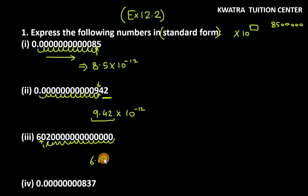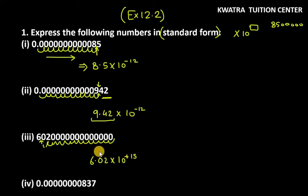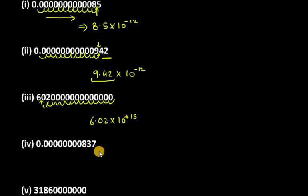We made 15 movements. So it will be 6.02 into 10 raised to the power positive 15. It is positive because it is a very large number and we move from the right-hand side to the left-hand side. Let's do the next one.